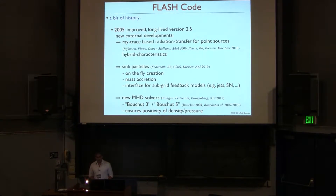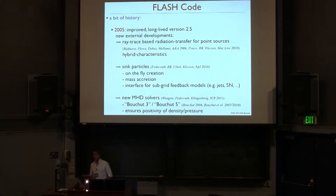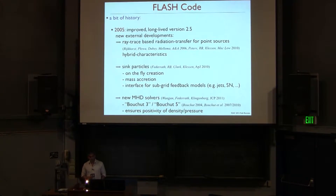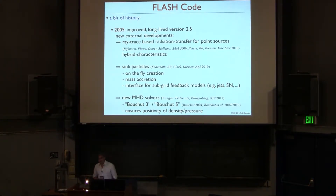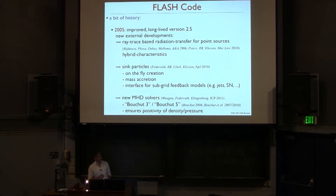Then another couple of years later they came up with version 2.5, which was quite a long-lived version — used for almost 8 to 10 years by a couple of research groups, with a lot of external contributors. From the list, there are contributions based on dealing with radiation transfer problems using a ray trace algorithm called hybrid characteristics, done by certain authors and also improved by Peters et al. over time.